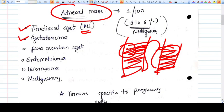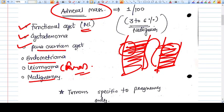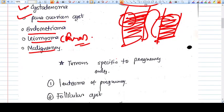It may be functional cyst, which is the most common, cystadenoma maybe mucinous or serous, para-ovarian cyst, endometrioma, leiomyoma, and even malignancy. Leiomyoma is fibroid, we can call it broad ligament fibroid. Three to six percent of adnexial masses are cancers.